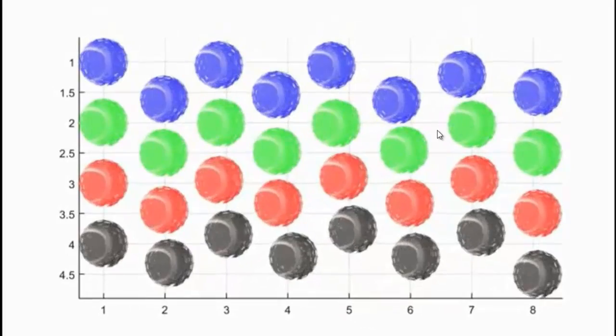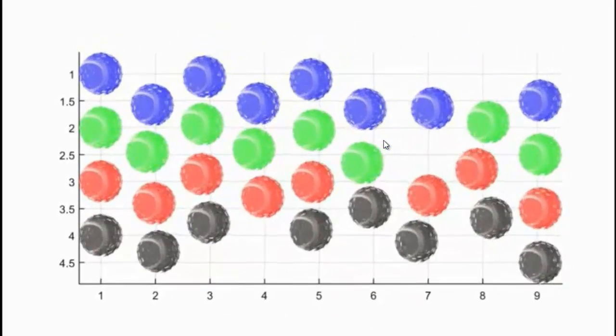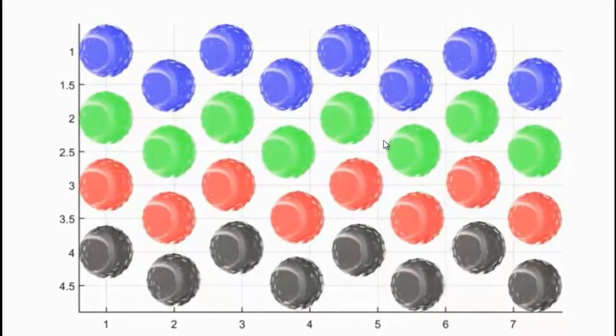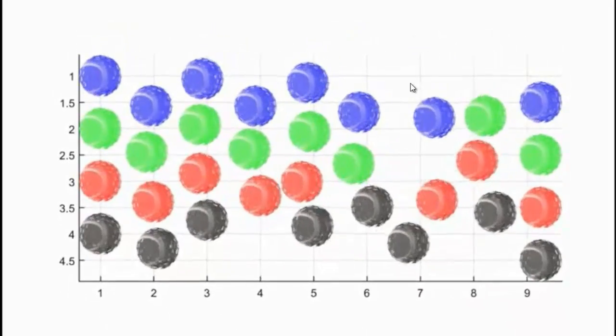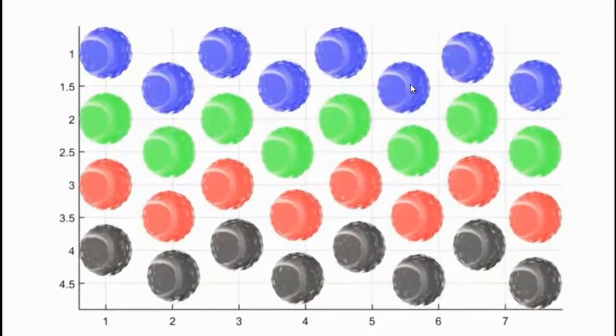What you can see then is how dislocations would run through a metal. They run under an angle of 45 degrees because in that angle you have the highest shear.